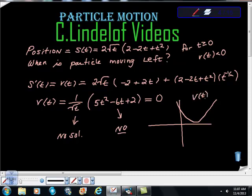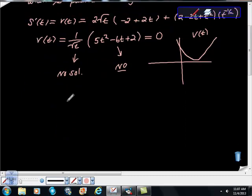We can see that this is v(t), this is the velocity function, and its heights are always above zero. So this thing never moves left, never moves left.